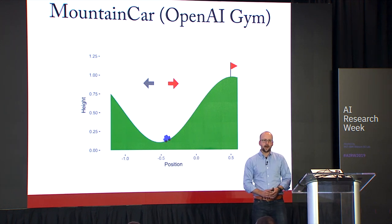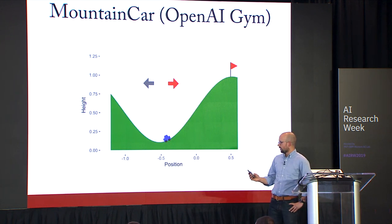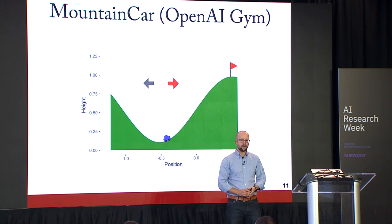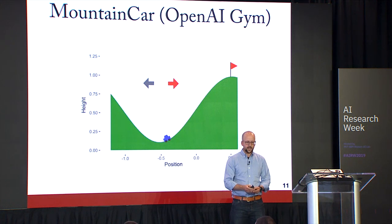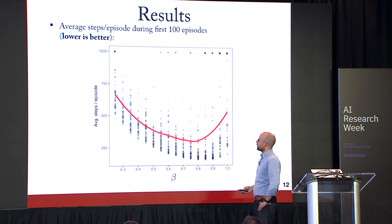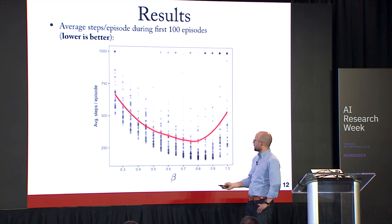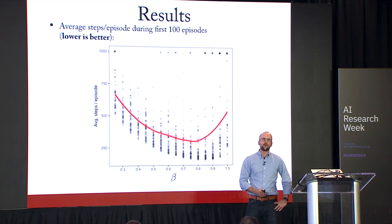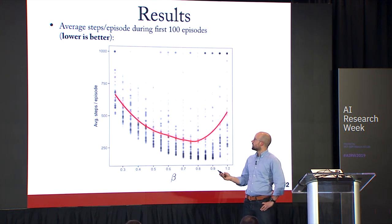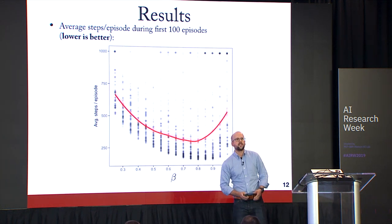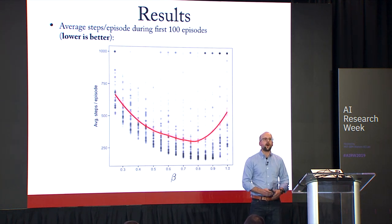In the mountain car environment, an agent tries to drive an underpowered car up a steep hill by rocking back and forth. We apply the same framework varying the bottleneck tightness. Lower is better since we want agents to reach the top as soon as possible. What we're showing is not just better generalization but better online learning — by restricting the capacity of your policy, you get better online learning in the training environment itself, without even modifying the environment.